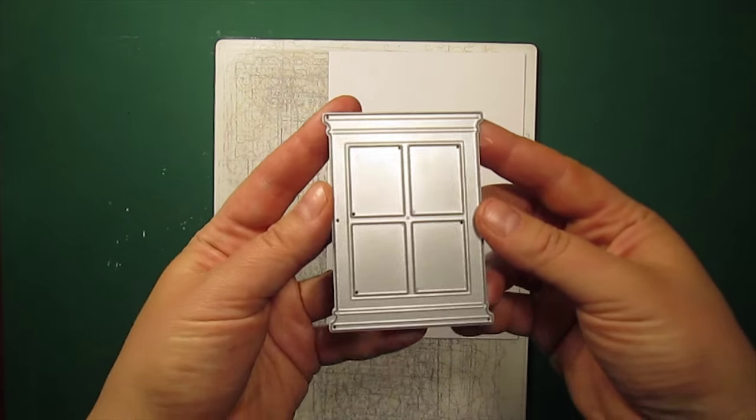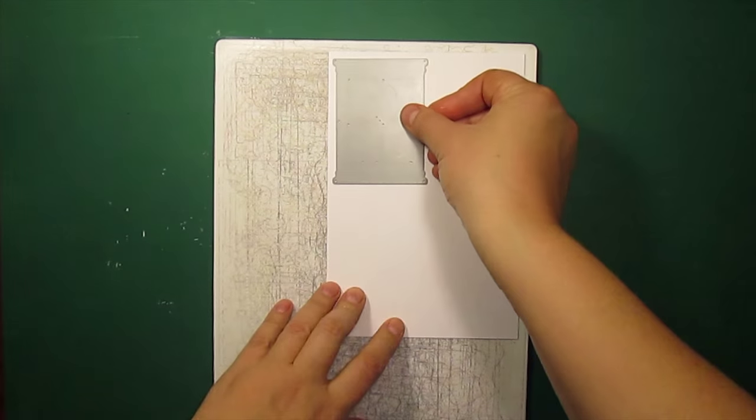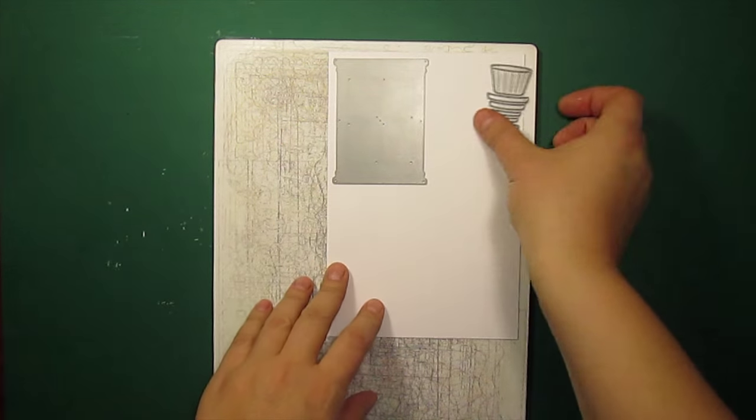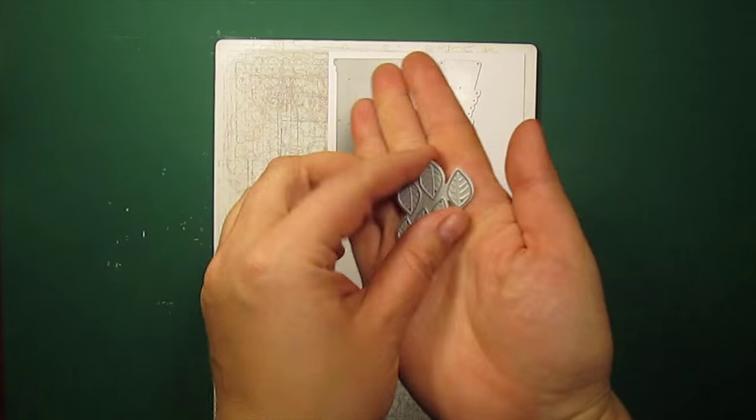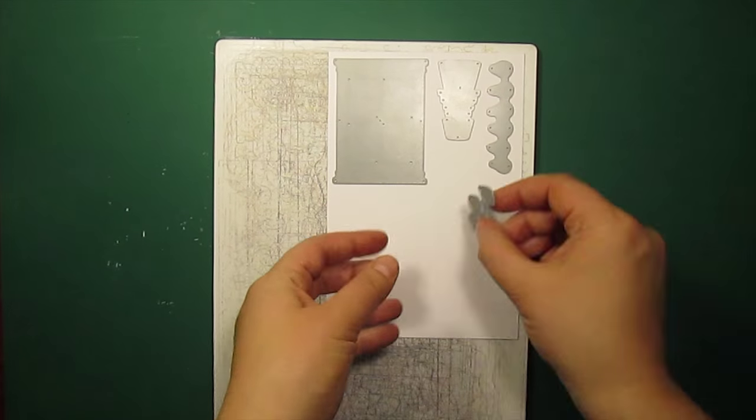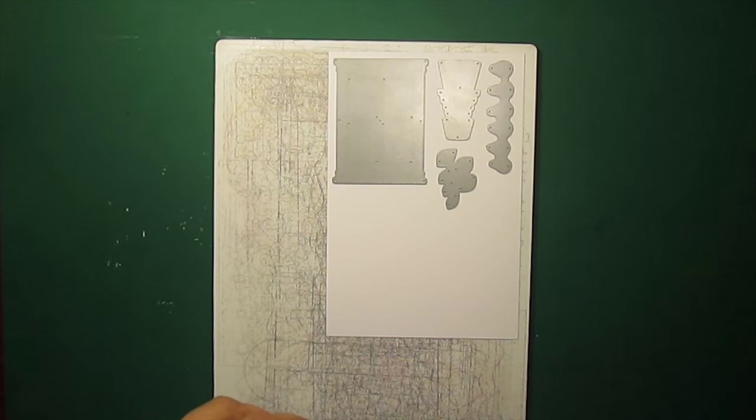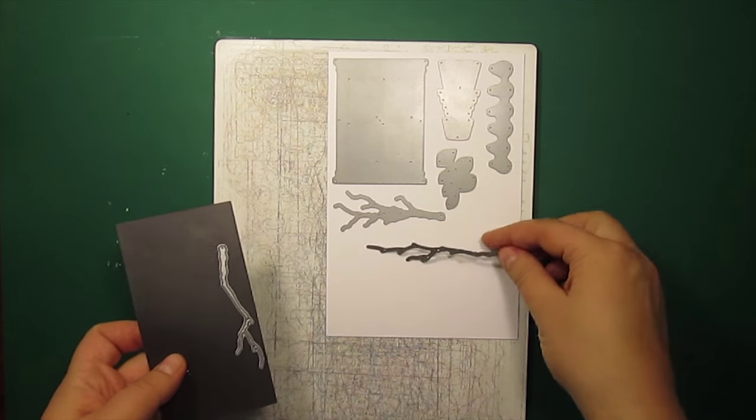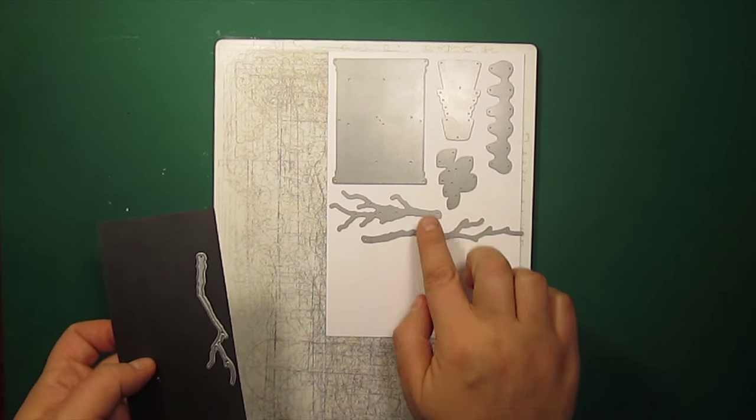Now it's time for the die cutting. I'll be using the small medicine window, bushel baskets, and harvest pears die set. All these are by Poppy Stamps. I will also use the die set called branching out. This one is by Memory Box.